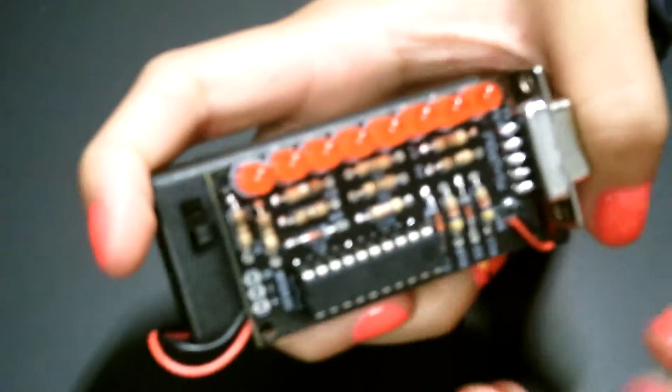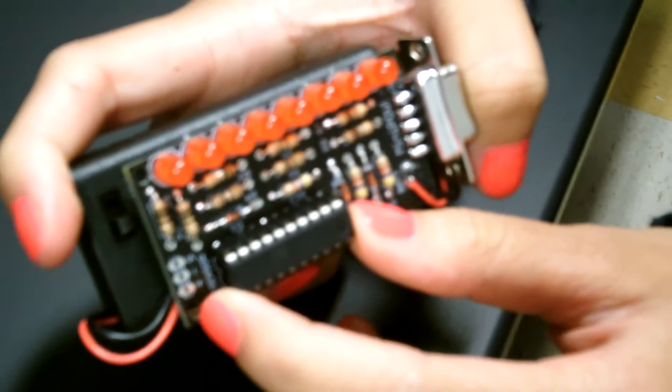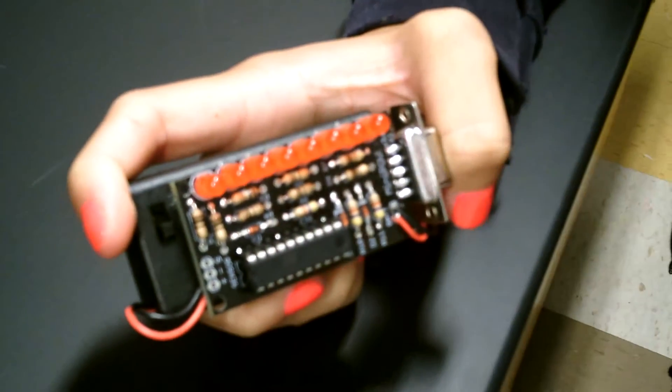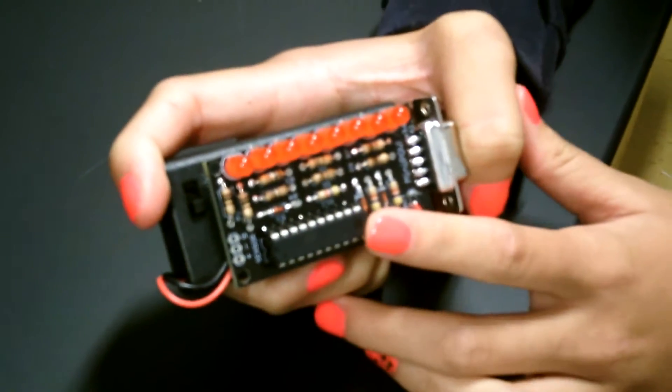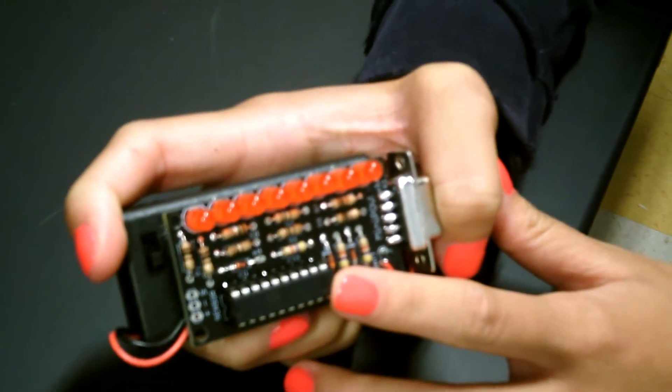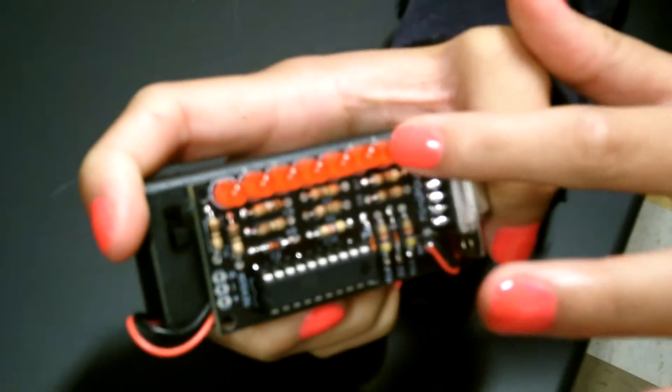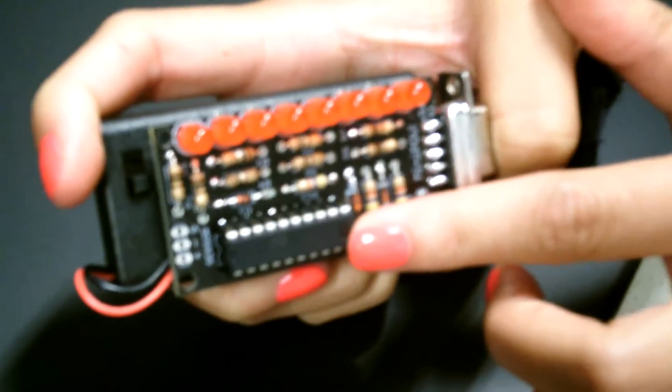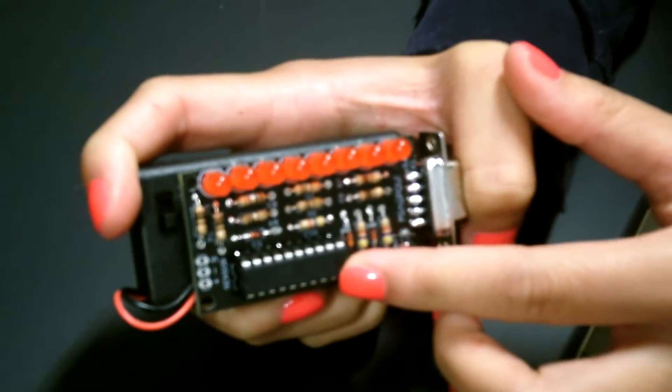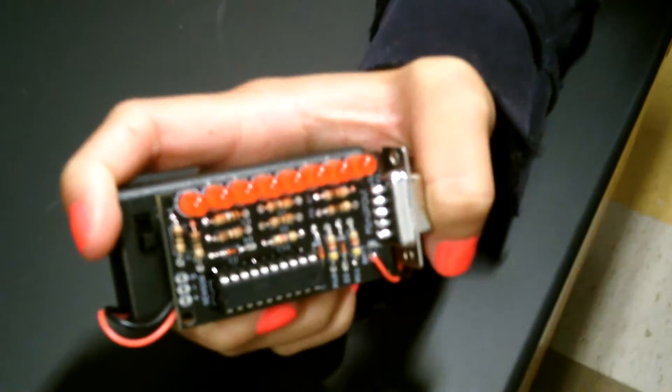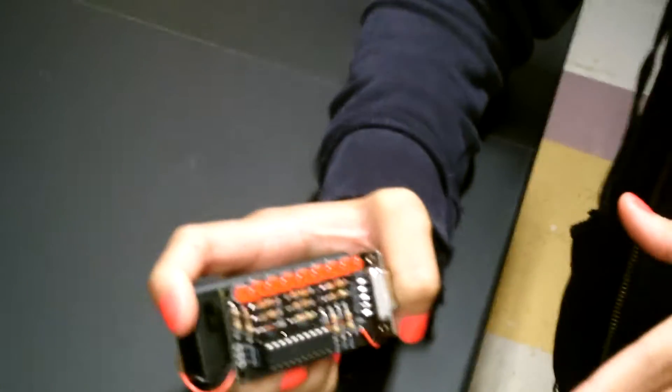The major part of the Mini-Pov is the microcontroller which is the ATtiny2313, and that is customized by the RVDUDE which is a command line program. The LED lights are controlled by the microchip. Zero is for off and one is for on.